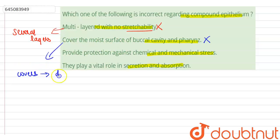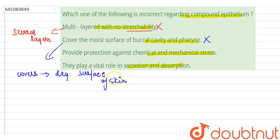Compound epithelium covers the dry surface of skin as well as the moist surface of buccal cavity, lining of ducts of salivary glands, and pancreatic ducts. So this is the correct statement, making it an incorrect option.